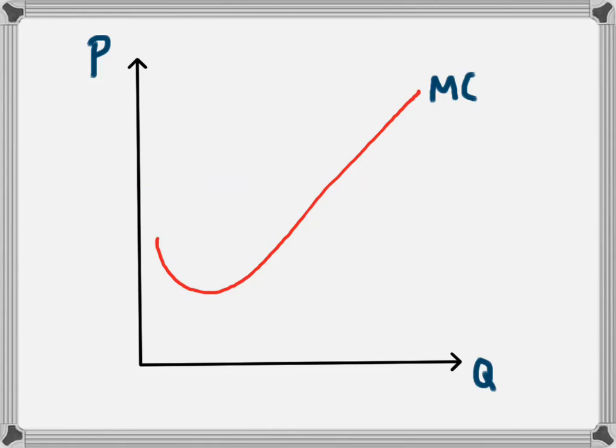A monopoly however is different. A monopoly is able to set its price. So at lower output levels the monopoly will charge a higher price.